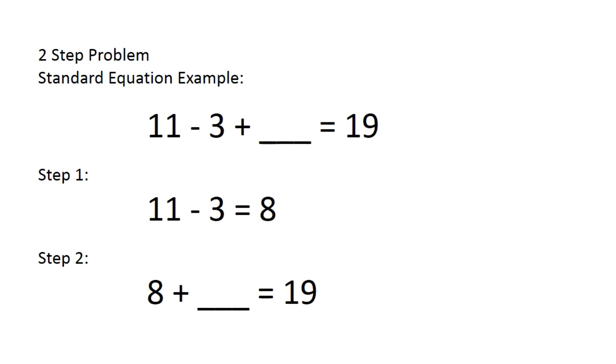First, we complete the subtraction problem: 11 minus 3 equals 8. Next, now we have the number 8, so 8 plus some number will equal 19.